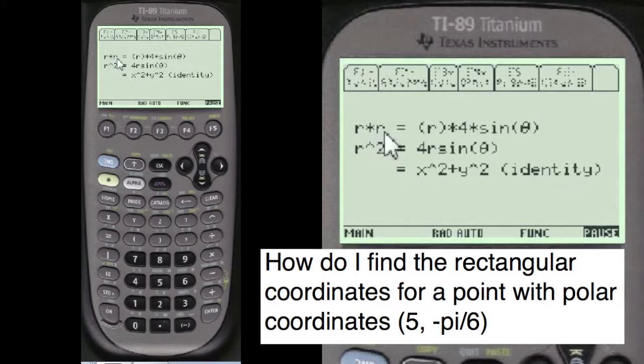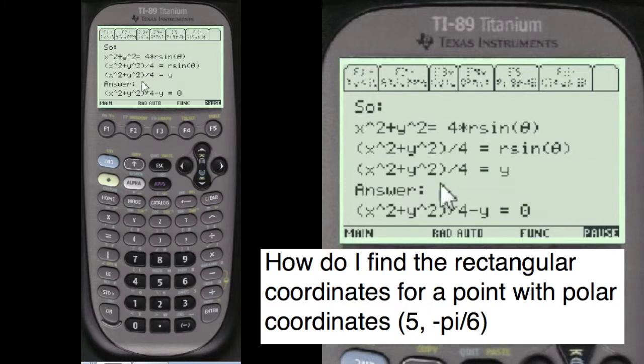You multiply both sides by r to get it to the identity format, which is r squared. So we have to multiply both sides by r, which we've done here. And r squared is equal to the identity x squared plus y squared. And so x squared and y squared equals 4 times r sine theta.